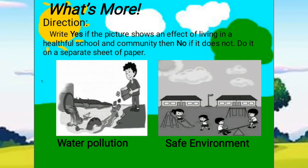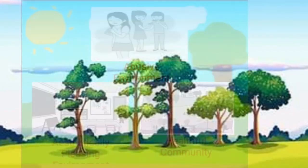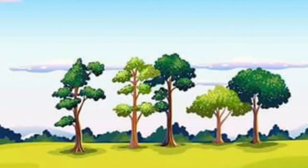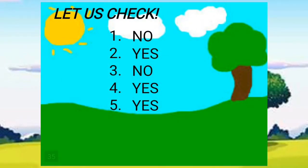Now here is your activity. Write 'yes' if the picture shows an effect of living in a healthful school and community, and 'no' if it does not. Do it on a separate sheet of paper. Number 1: water pollution. Number 2: safe environment. Number 3: abusive environment. Number 4: aesthetically pleasing environment. Number 5: healthful community. Let us check your answers: number 1 is no, number 2 is yes, number 3 is no, number 4 is yes, and number 5 is yes.